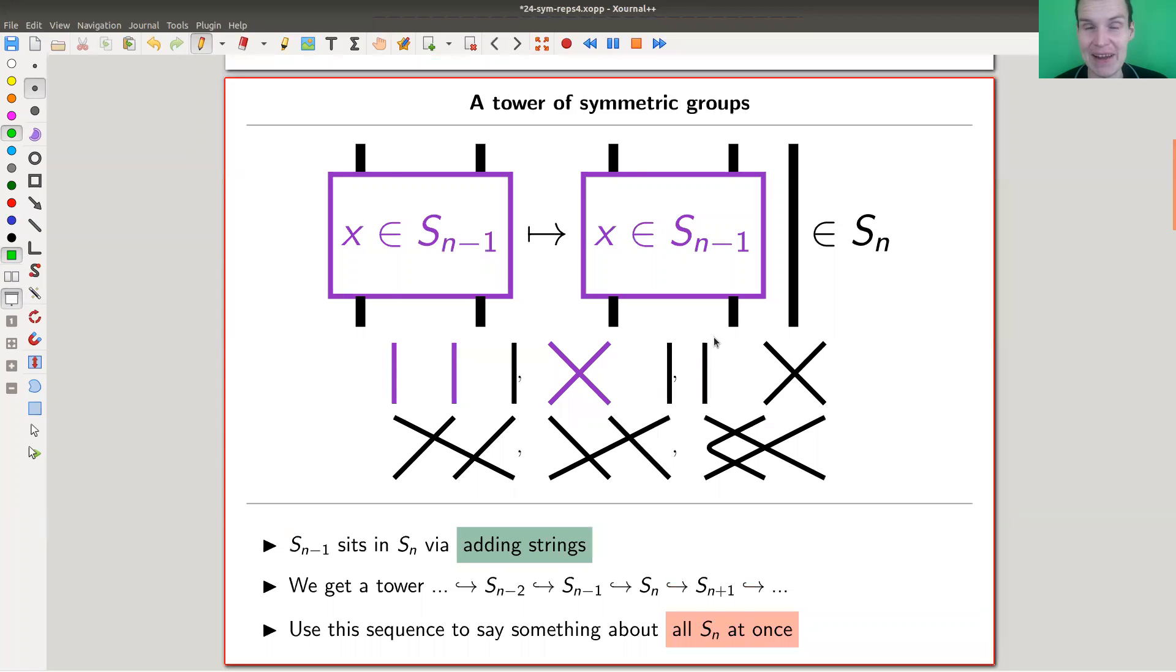Symmetric groups are actually really nice objects if you study them all at once. There is what people call a tower, which is really just a sequence of embeddings from S_{n-1} to S_n to S_{n+1} and so on. The embeddings are really simple. You take your element in S_n, which you could think of as a string diagram—some box with a number of outgoing strings—and you embed it into S_{n+1} by just adding an additional strand.